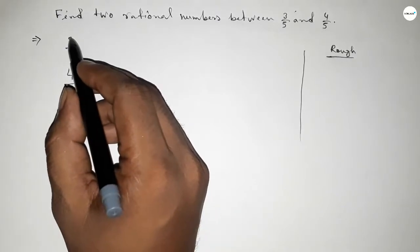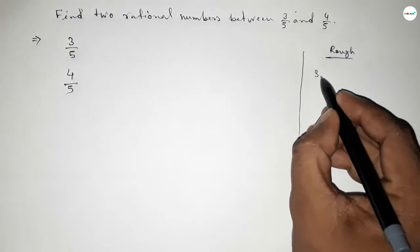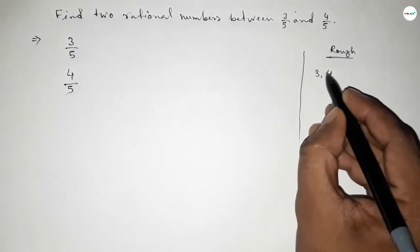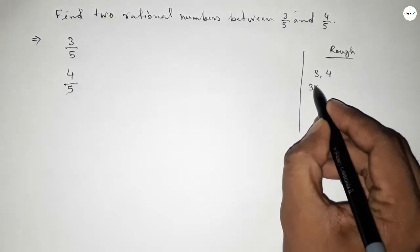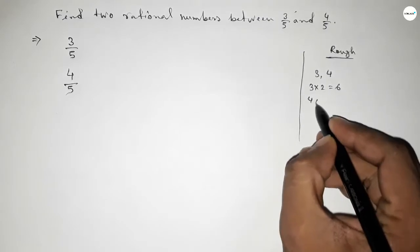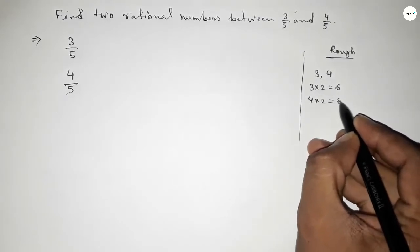...two numbers between 3 and 4. We can find infinite numbers between 3 and 4, but we need to find 2 natural numbers between 3 and 4. If you multiply 3 and 4...